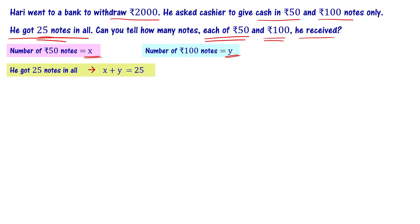So total cash he received is ₹2000. 50 times x is the amount he got in ₹50 notes, and 100 times y is the amount he got in ₹100 notes. So total money he received is 2000, that is equal to 50 times x plus 100 times y.